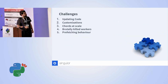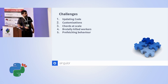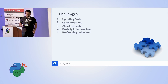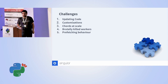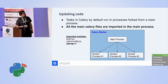That brings me to five challenges I want to dive into. The first — and probably the most common — is updating code and what we did to support that. I'll also talk about customizations we made, since Celery is very easy to extend. Then I'll cover chords, one of the workflows we showed earlier and some experience we had with it. Finally, I'll discuss two specific problems: killed workers and prefetching behavior.